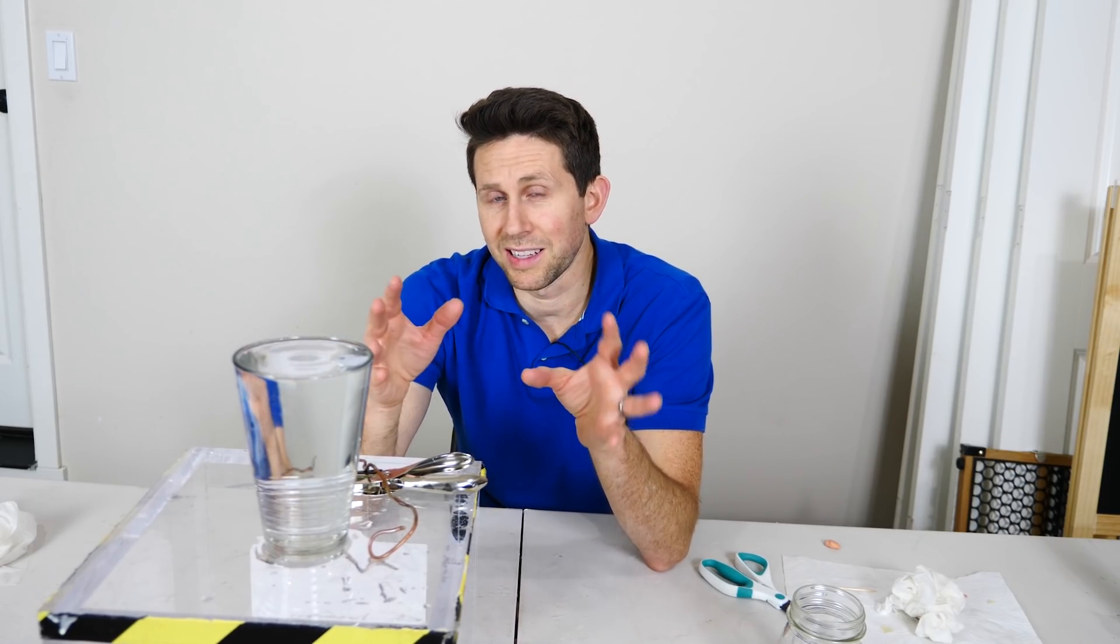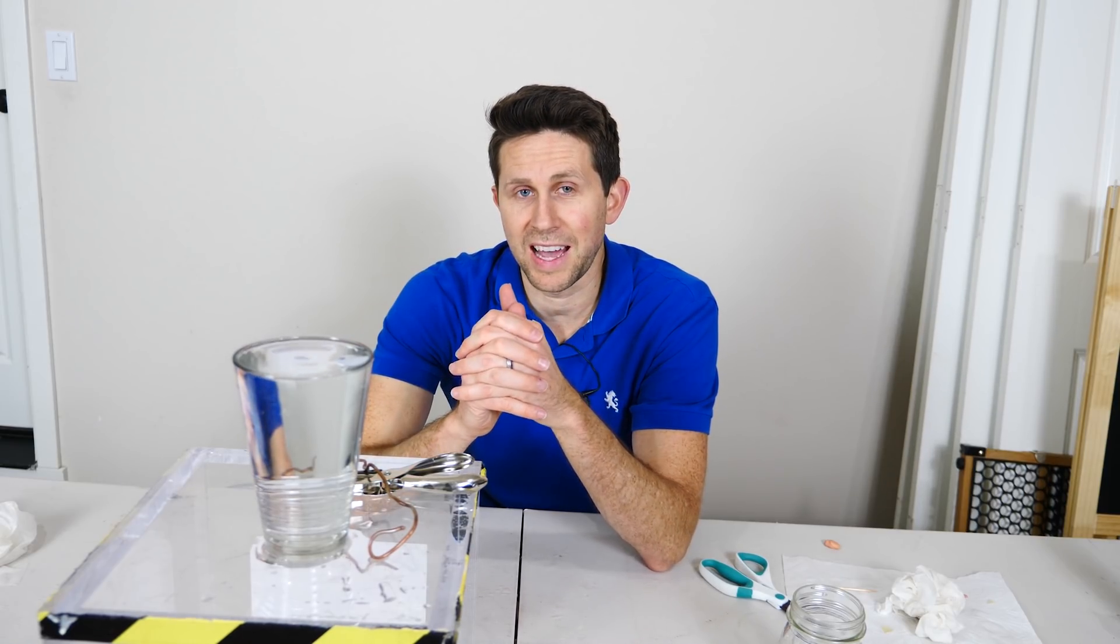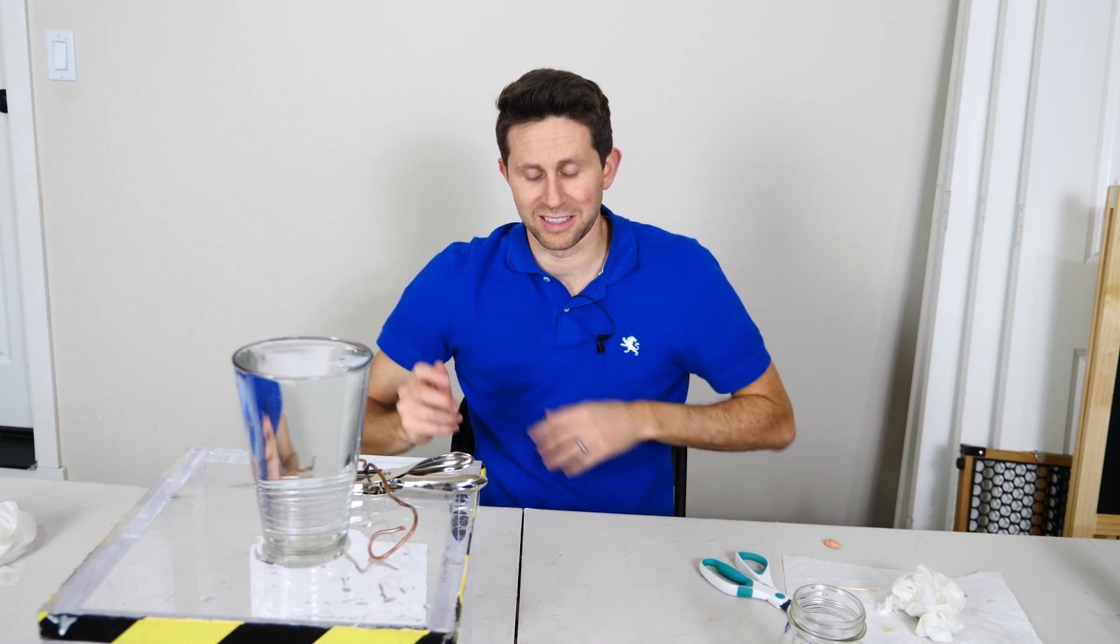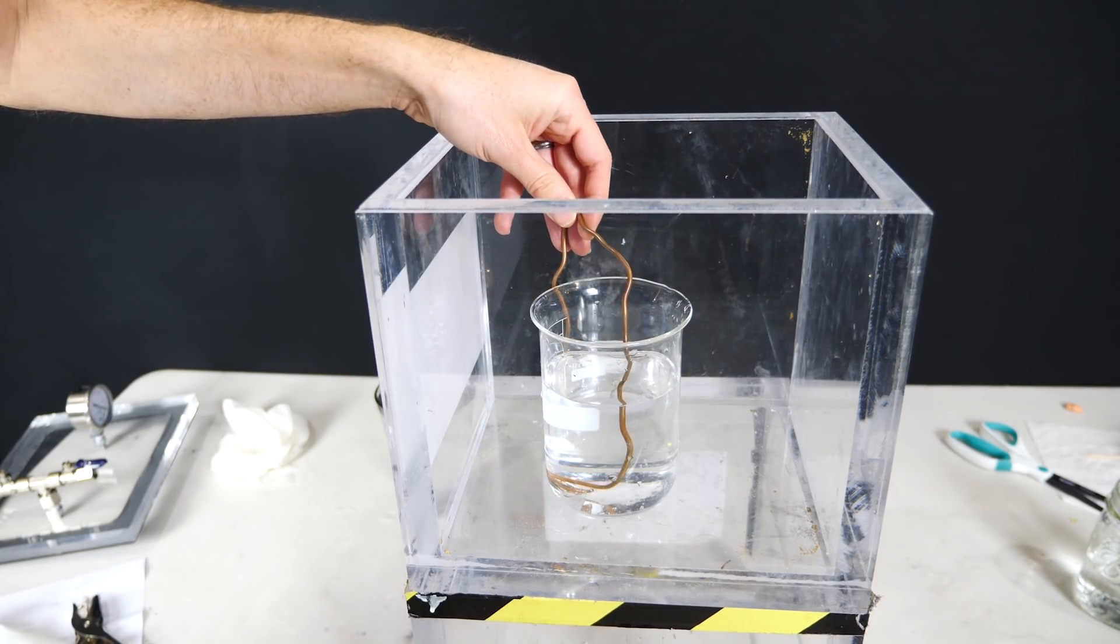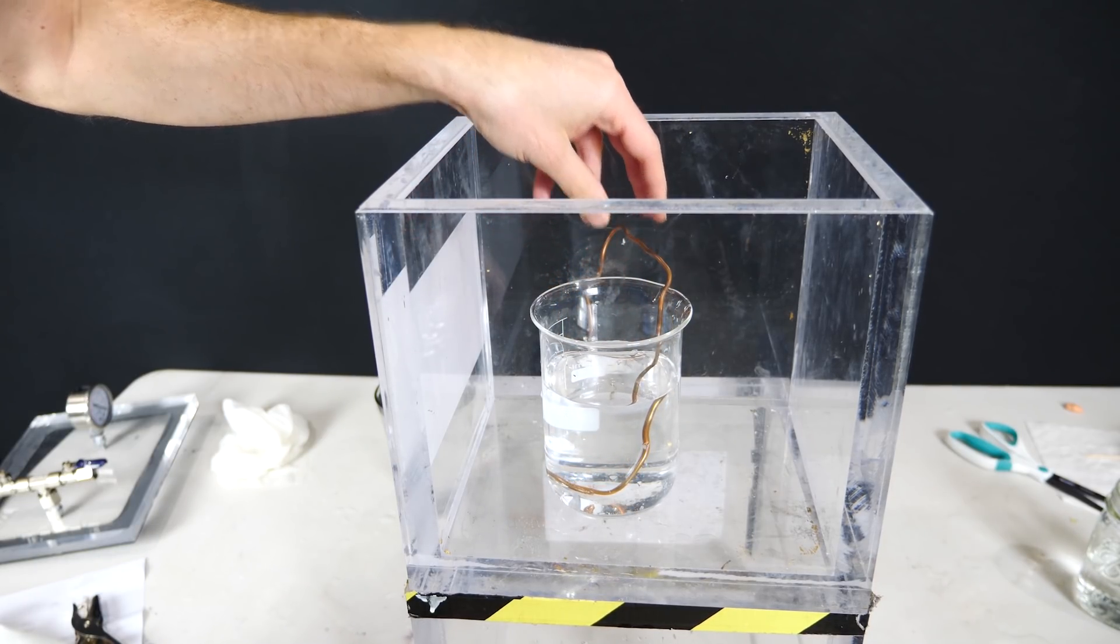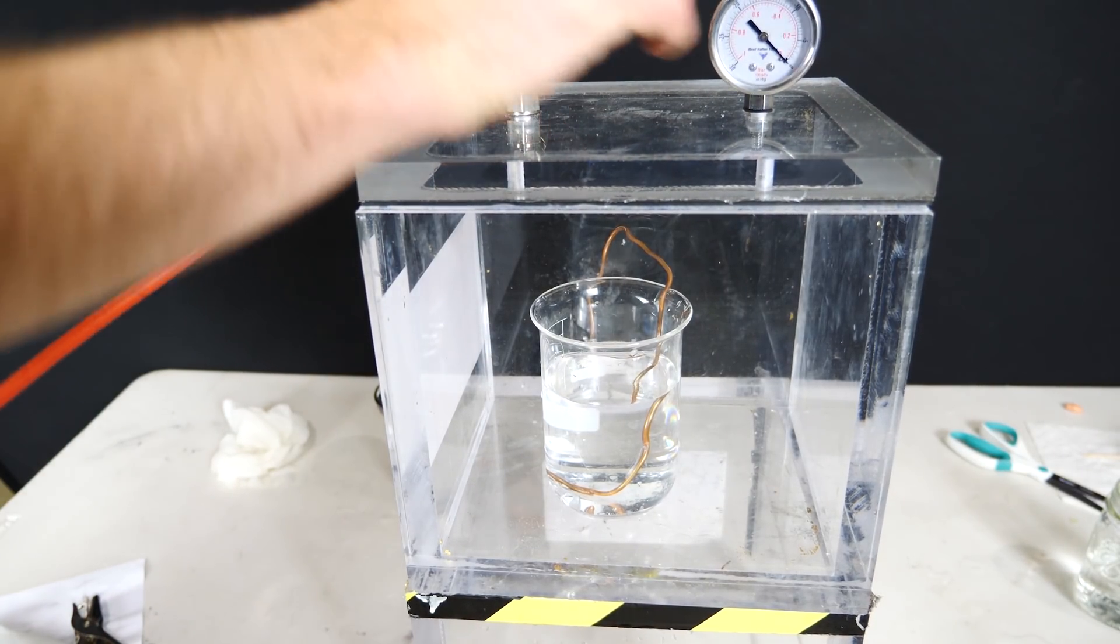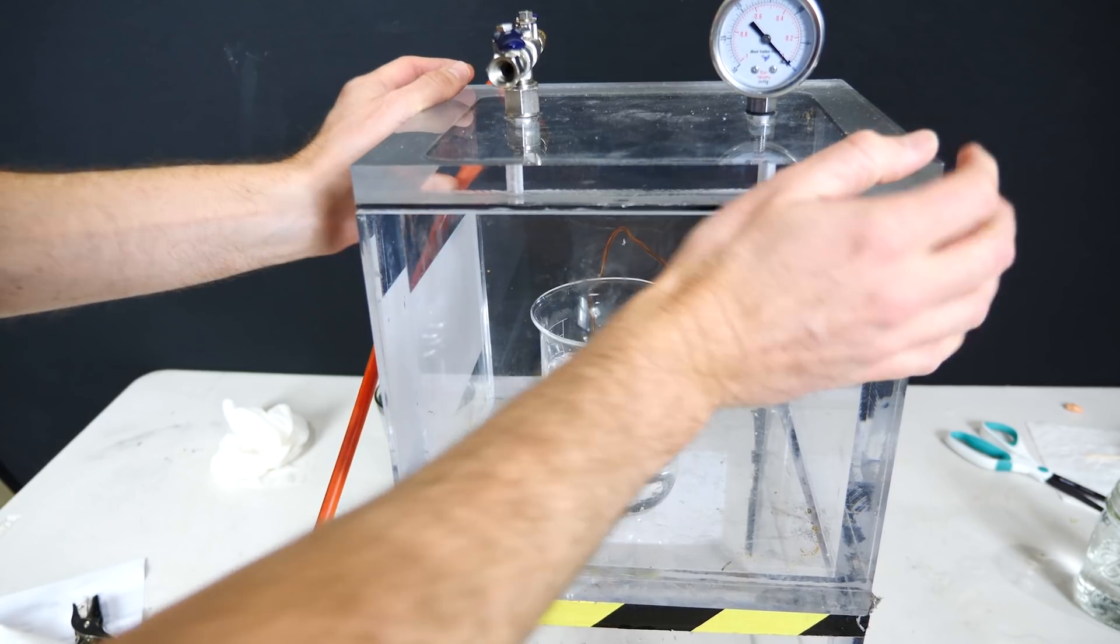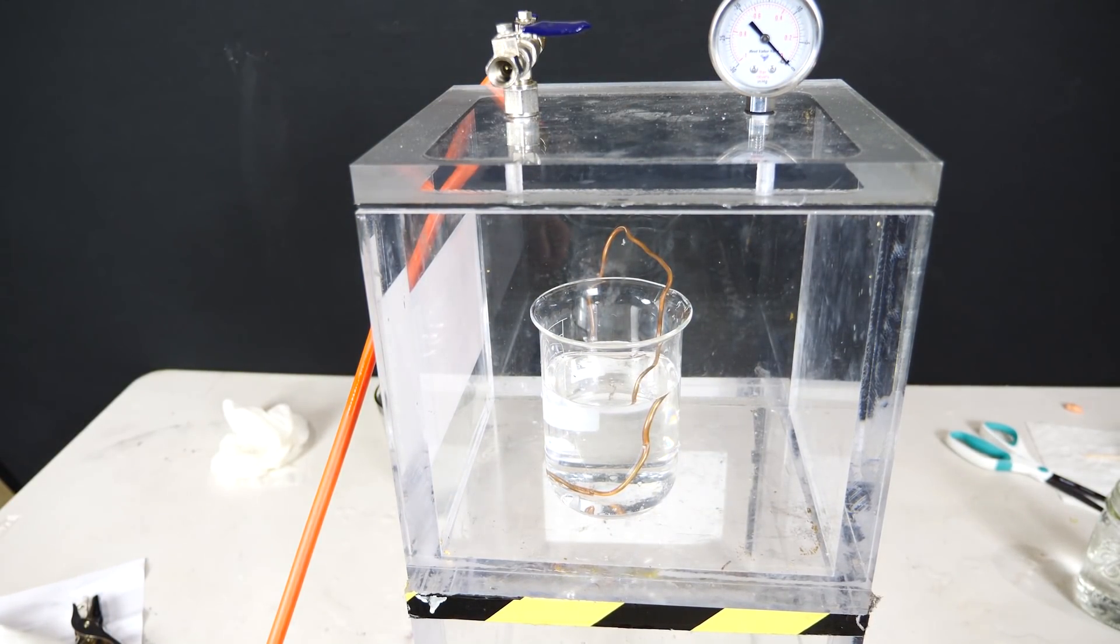And we can actually show this as well with my unsinkable metal. I can actually make it sinkable by sticking it in the vacuum chamber. Let's see if it works. So first I need to submerge it under the water for this to work. So it has to stay submerged during this experiment. Then turn on my vacuum chamber.